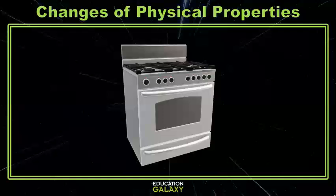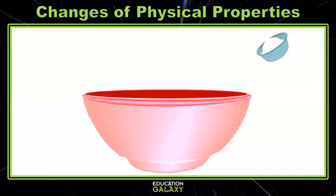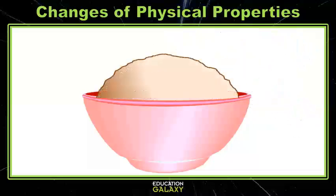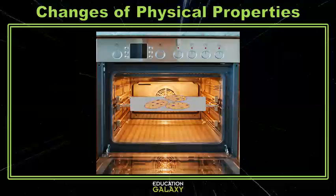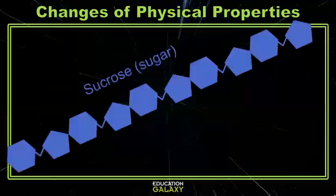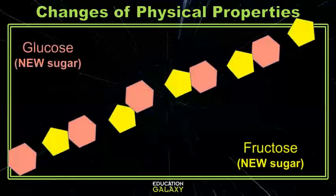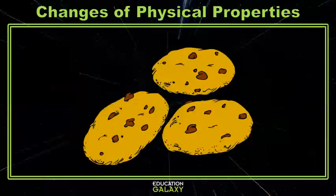Almost all baking falls under chemical changes as well — from baking chicken, to cookies, pies, and potatoes. Let's take a look at cookies. To make cookies, you add sugar, flour, eggs, butter, and chocolate chips and mix it into a big sticky mixture. Up until this point it's a physical change, because you could undo it. But something happens when you put that cookie dough into the oven. The sugar changes into caramel, which is a new substance. All of the bonds break due to heat, making two new sugars — glucose and fructose. The same thing happens to the proteins in the eggs and butter. When the cookies come out of the oven, they taste different and have changed color. This is a chemical change.